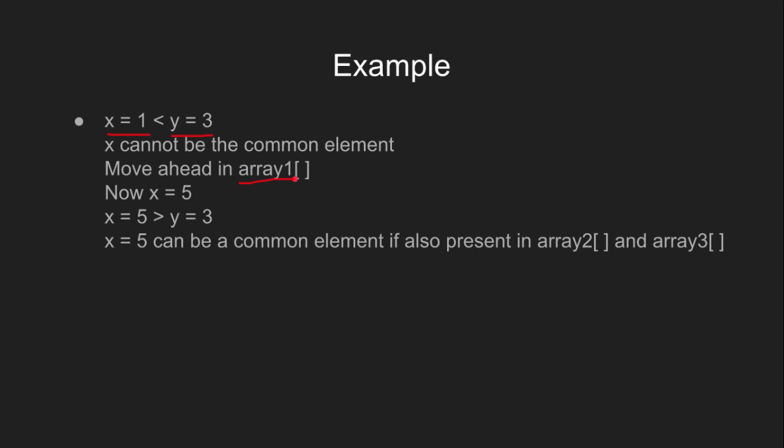Next, we have x equal to 5. The current value of x is changed to x equal to 5. Now, x is greater than y. So x can be a common element if it is present in both array 2 and array 3. Next, we look at z. Now, y equal to 3 is less than z equal to 5. So obviously, y cannot be a common element. So we move ahead in array 2.